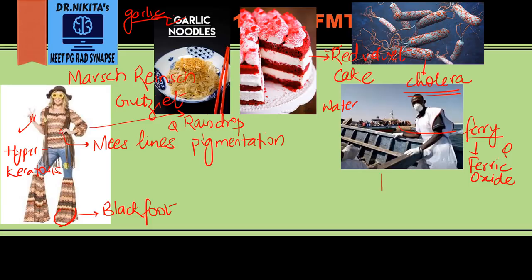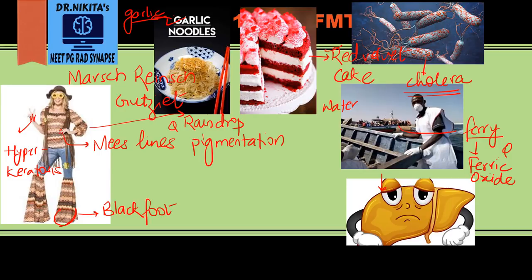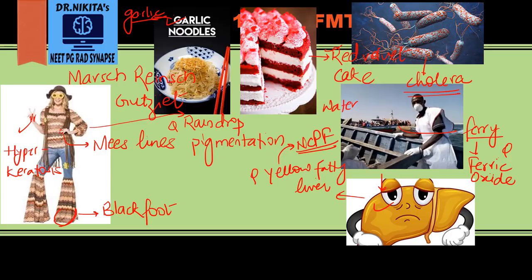Once arsenic is ingested, it deposits maximally in the liver, leading to yellow fatty liver seen with arsenic poisoning. This then progresses to non-cirrhotic portal fibrosis. For acute poisoning, the liver is the sample of choice.